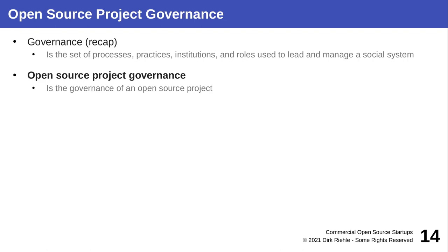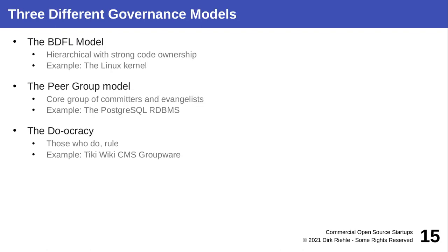Software development processes are more complex than just one quality measure. Every open source project can be different because there's no big boss and the projects are self-organizing. These processes are one aspect of open source project governance, which is a broader term. It involves the software development process — do we do peer review, do we have continuous integration — and also the roles and how you advance from user to contributor to committer, and how to handle difficult situations like removing someone from a project fairly.